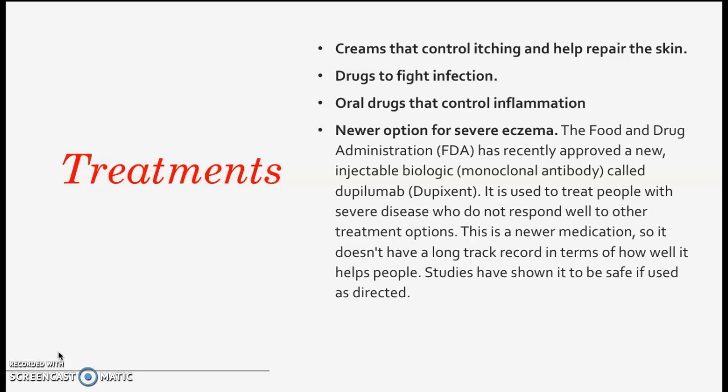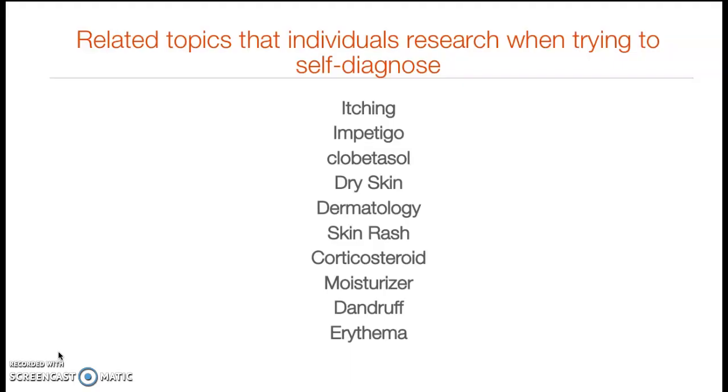The medication is a monoclonal antibody called dupilumab. It is used to treat people with severe disease who do not respond well to other treatment options. It is a newer medication, so it doesn't have a long track record, but studies have shown it to be safe when used as directed.